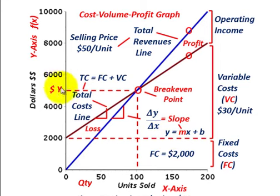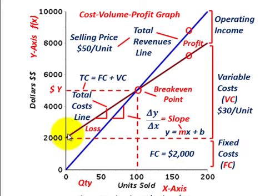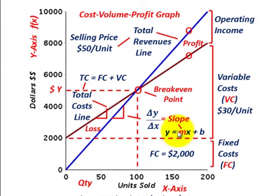All these relationships are really built on the basic algebra equation where y equals the slope of the line times the units sold, plus b, which is where the line crosses the y-axis. That's just basic algebra — a reference you'd use when trying to determine your total costs and total revenues.